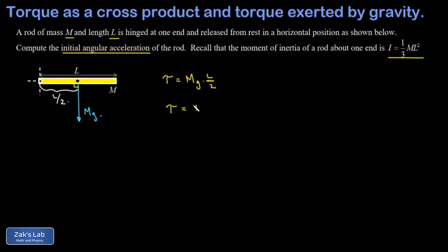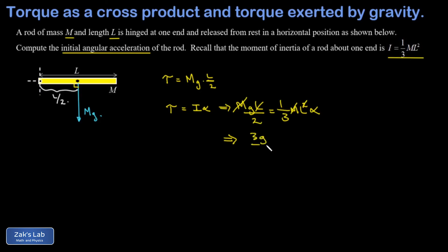Alpha is the only unknown. Canceling m and l, then multiplying both sides by 3 and dividing by 2l, I arrive at α = 3g/(2l).